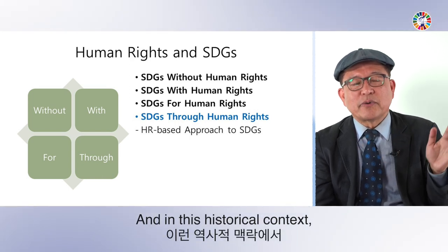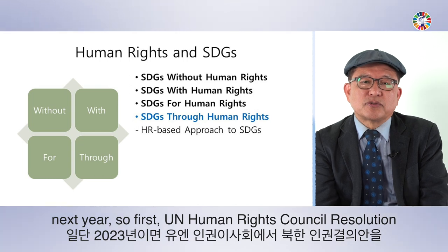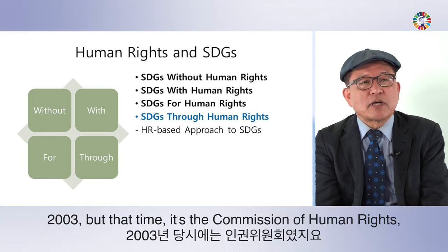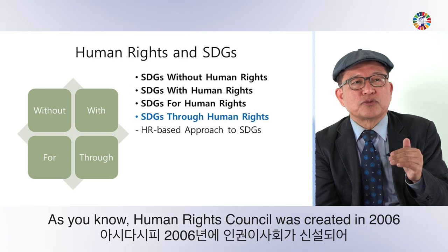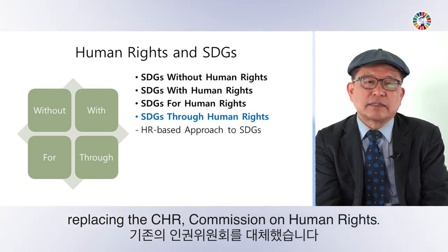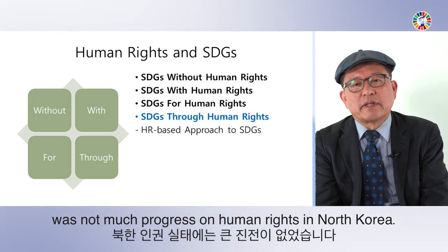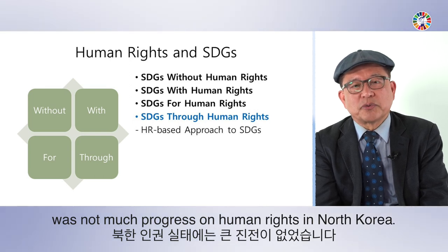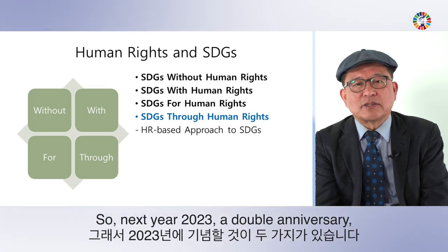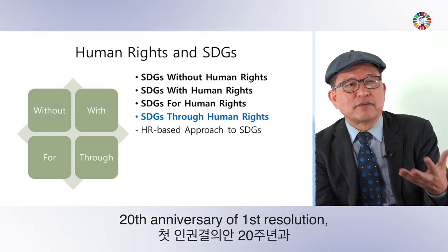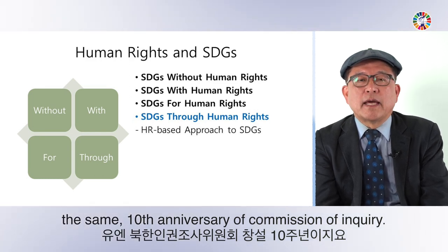In the context of North Korean human rights, the first UN Human Rights Council resolution on DPRK was 2003 — at that time it was still the Commission on Human Rights. The Human Rights Council was created in 2006, replacing the Commission. Ten years after the first resolution, with little progress, the UN created the Commission of Inquiry in 2013. So 2023 is a double anniversary: 20th anniversary of the first resolution and 10th anniversary of the Commission of Inquiry.